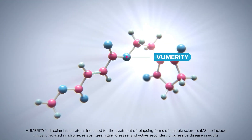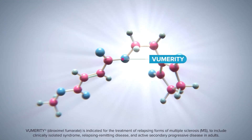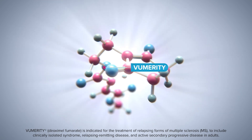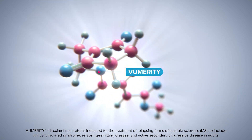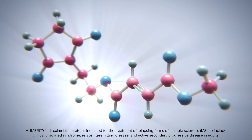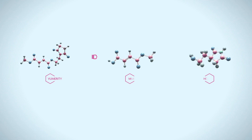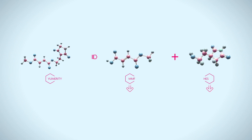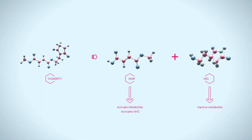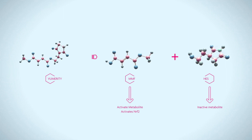Vumerity, diroximal fumarate, is indicated for the treatment of relapsing forms of MS, to include clinically isolated syndrome, relapsing-remitting disease, and active secondary progressive disease in adults. It belongs to a group of drugs known as immunomodulators, although the mechanism of action of Vumerity is not fully understood. Preclinical and clinical research suggests that MMF, the active metabolite of Vumerity, activates NRF2, which increases antioxidant activity and is involved in cellular response to oxidative stress.